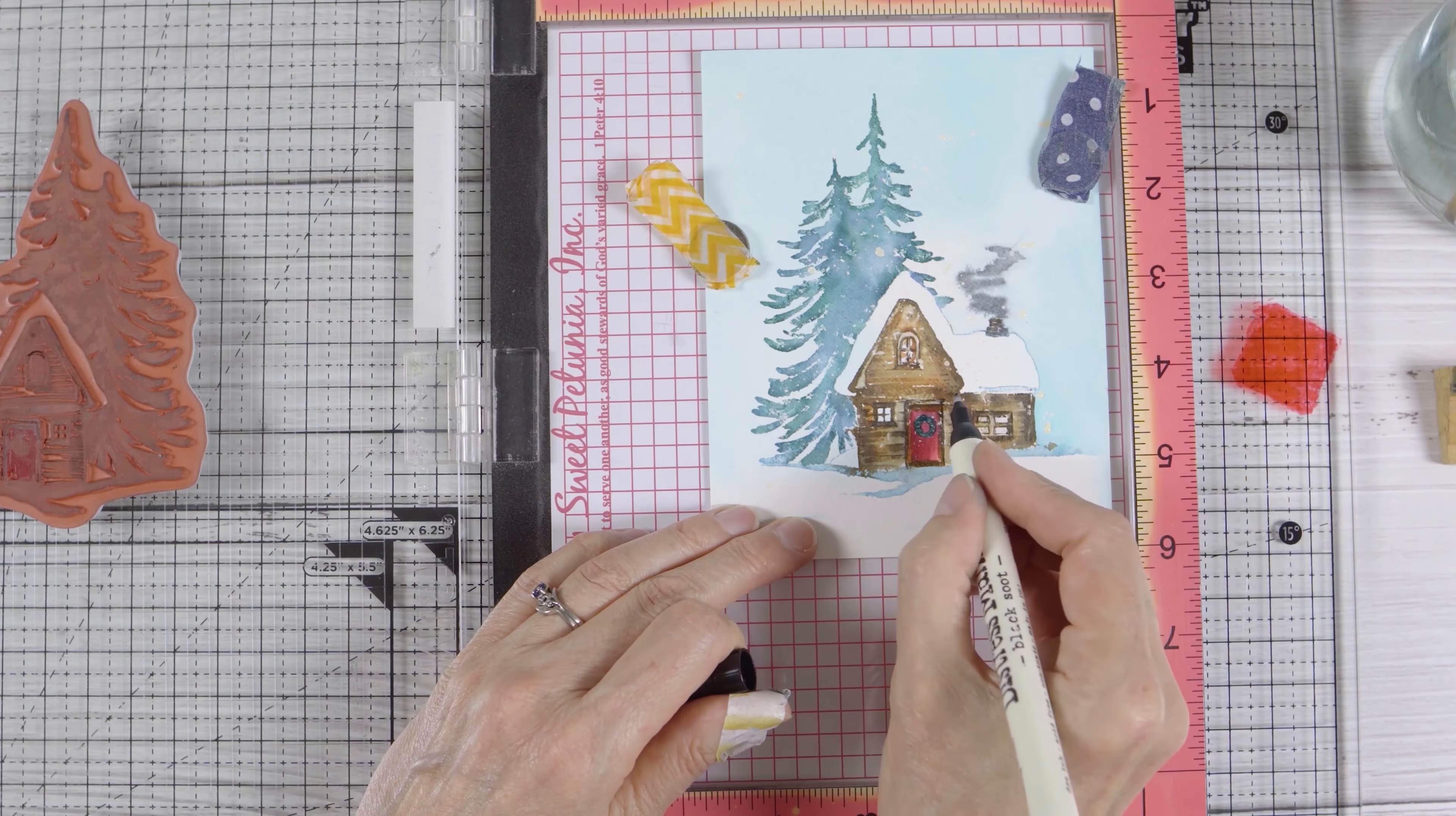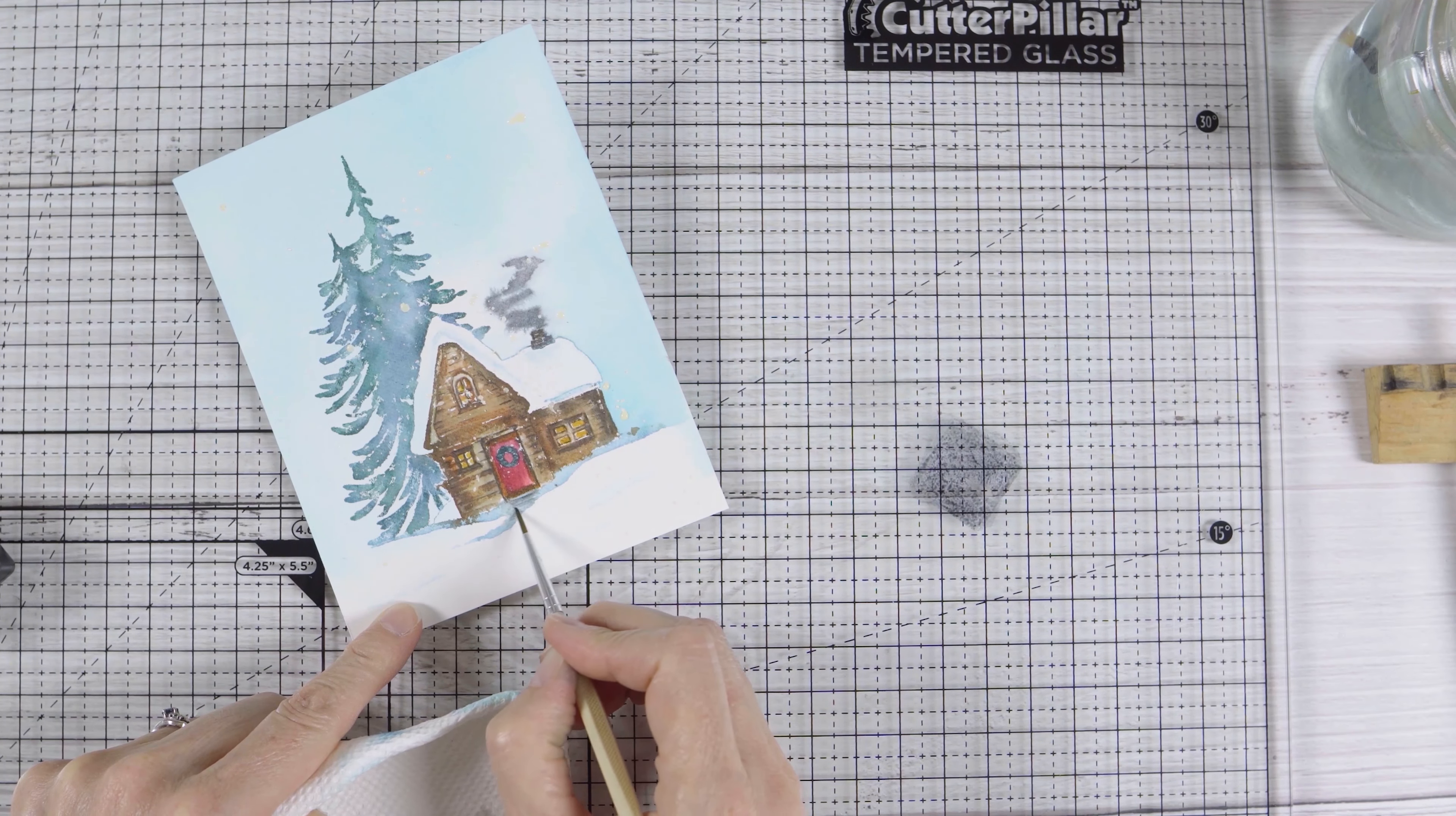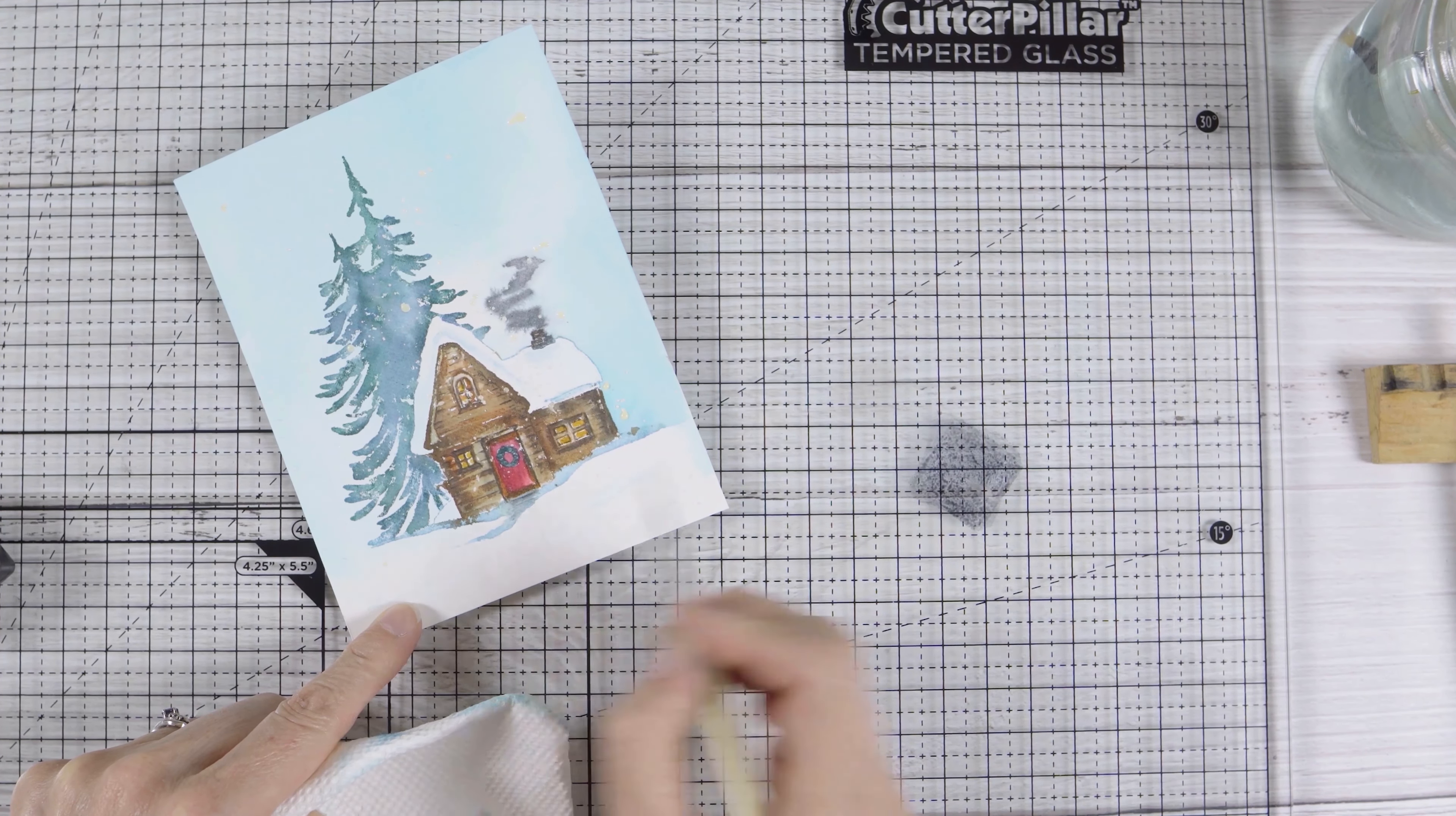I want some warm inviting light shining out the windows, so I'm adding that with a wild honey distress marker and then just dabbing it off a little. Last thing I'm going to do is just paint in a little path at the front door which disappears behind the snow bank. This is where the snow is cleared right near the front door, something I know plenty about.